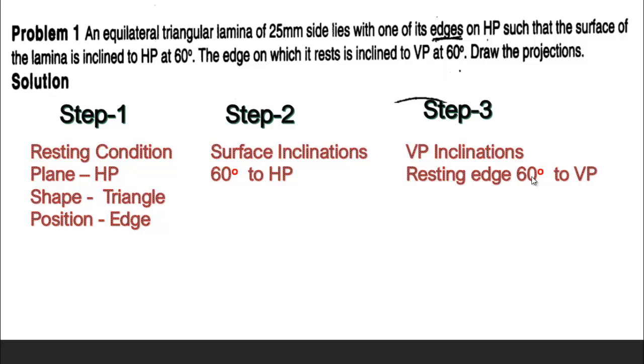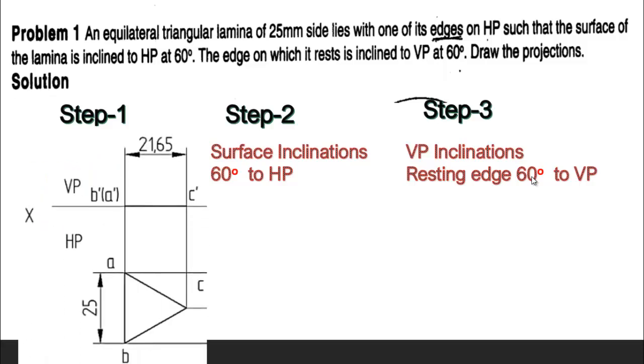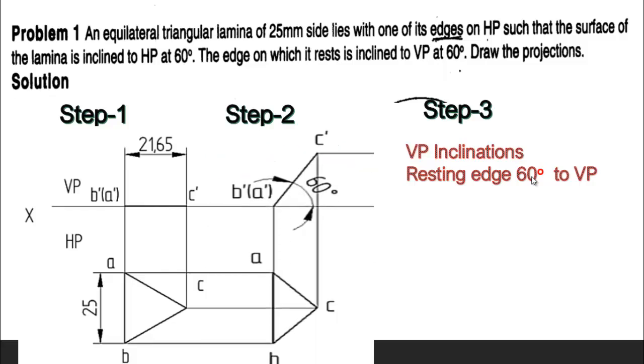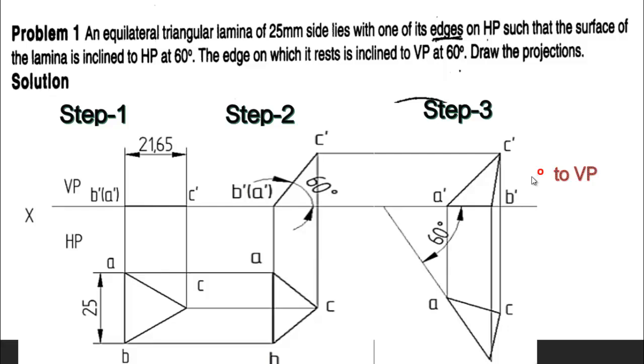So that is also we need to write it here. Coming to the solution, first we take the resting condition, and then the surface inclination we have to make 60 degrees, and the resting edge AB is inclined to VP like this we need to place.